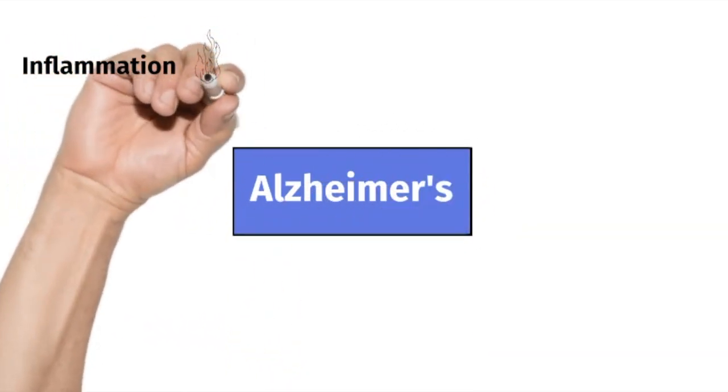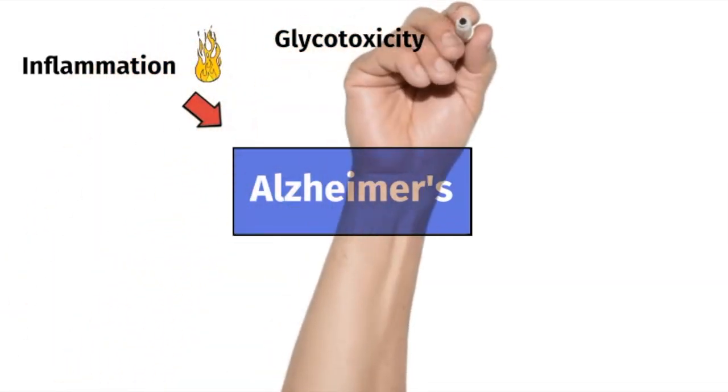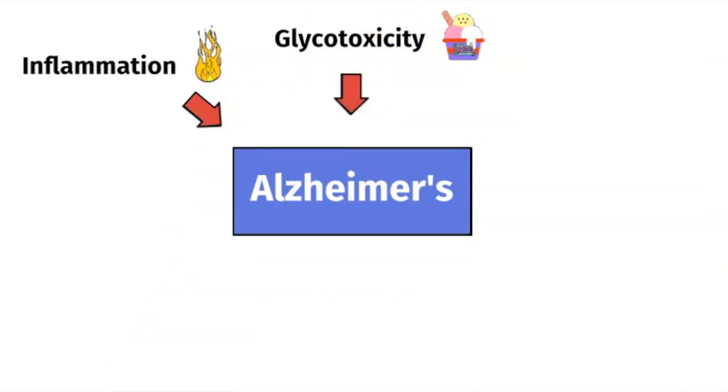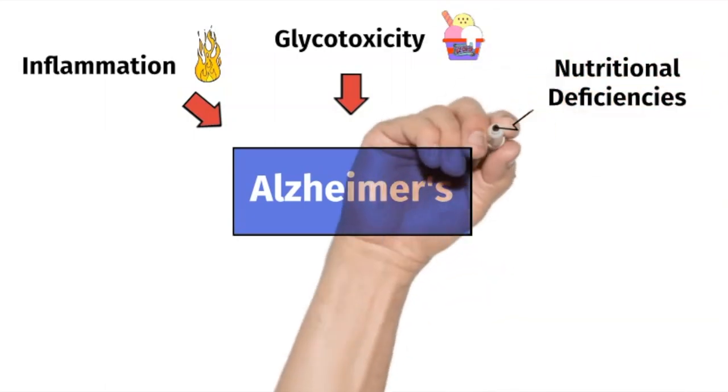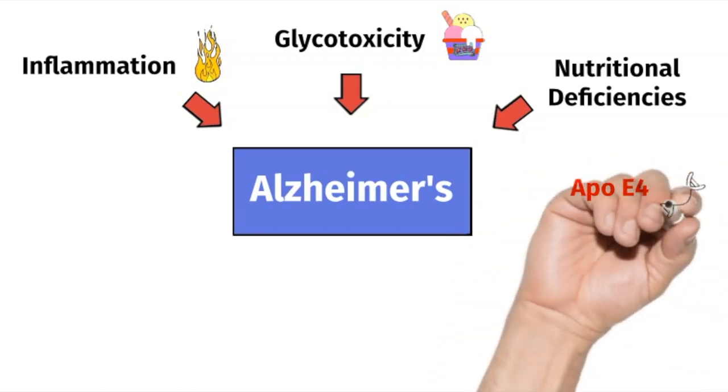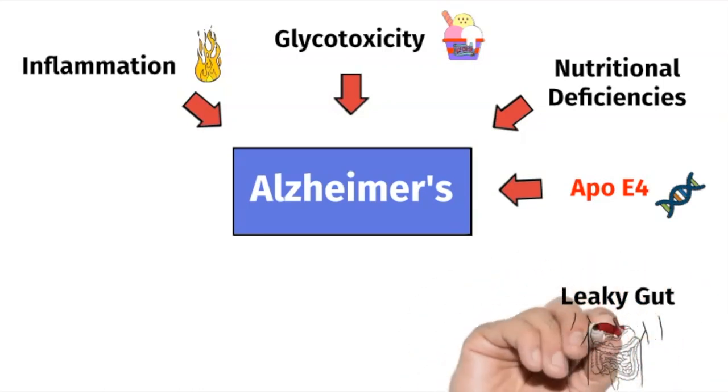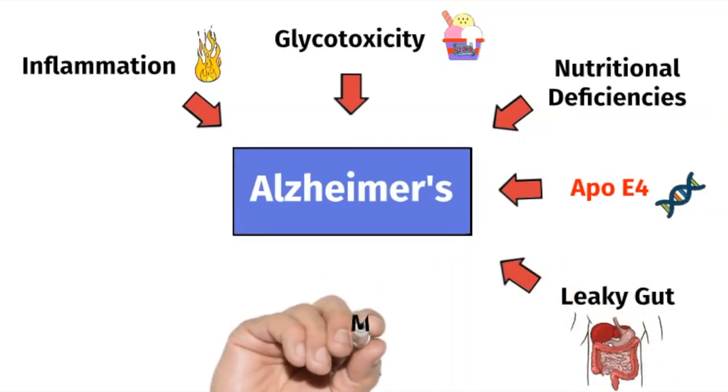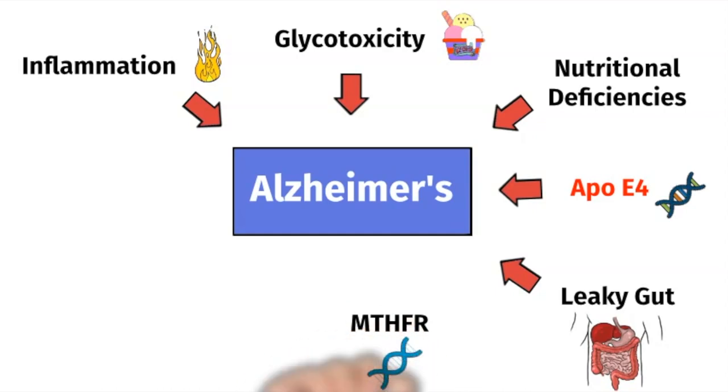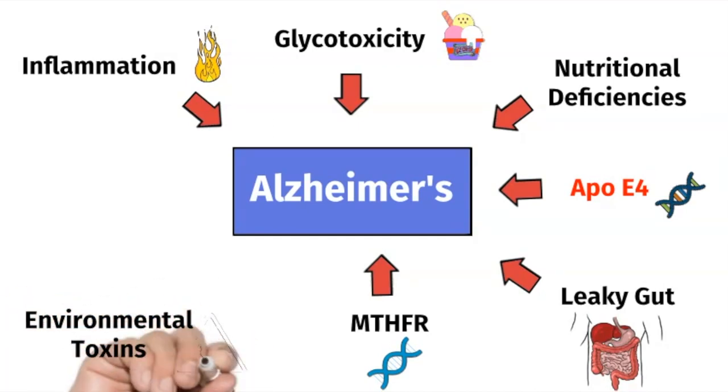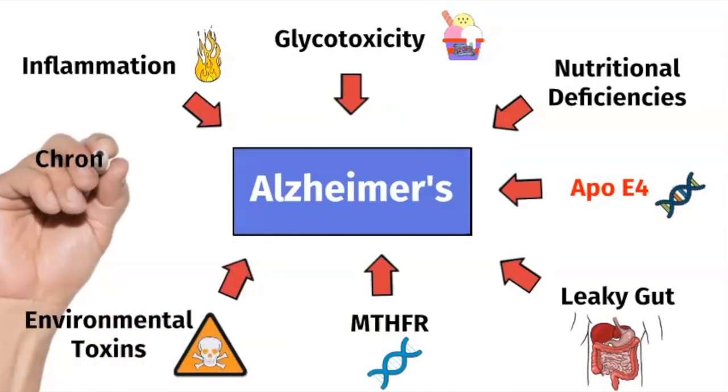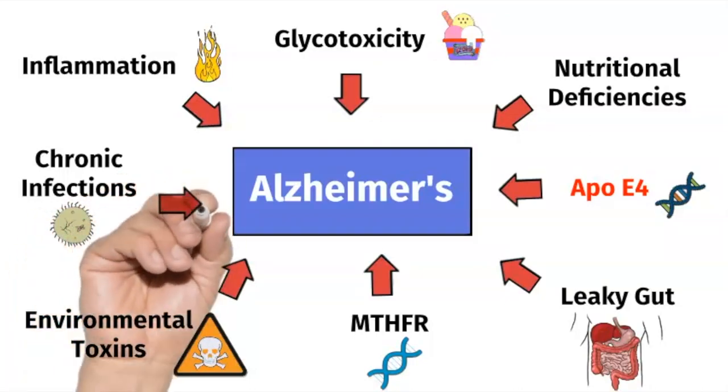Let's go over all the possible causes of Alzheimer's disease. Inflammation in your body can contribute to inflammation in your brain, which can then cause Alzheimer's disease. Glycotoxicity, which means toxicity from high blood sugar, as seen in diabetes, is another cause of Alzheimer's disease. Nutritional deficiencies could also impact your brain, leading to Alzheimer's. As we went over, the ApoE4 gene is a genetic risk factor for Alzheimer's. Having inflammation in your gut, also known as leaky gut, can also contribute to Alzheimer's. A mutation in a gene called MTHFR, which controls detox pathways in our cells, could also put you at higher risk of Alzheimer's. Exposure to toxins from the environment is another risk factor. Finally, having a chronic infection anywhere in your body, like your gums, your teeth, your sinuses, or having a chronic infection with Lyme disease, herpes viruses, or fungal overgrowth like Candida, could all contribute to Alzheimer's disease.